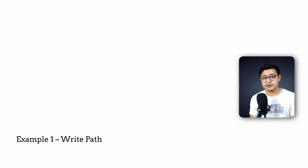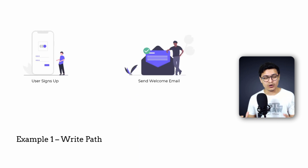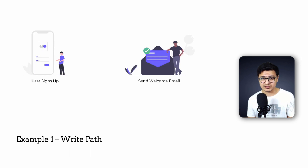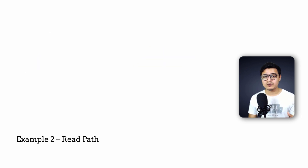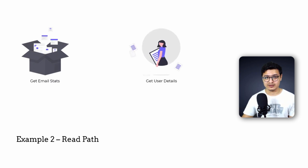To explain the different types, I'm going to take two examples involving communication between an email and a user service. The first example is a user signing up, followed by sending out a welcome email — what I call the write or mutation path, because it ends up changing some state in our system. The second example is retrieving the email stats of a user: things like the open rate, click-through rate, etc., along with details of that user. Both examples require interaction between the user and email service.